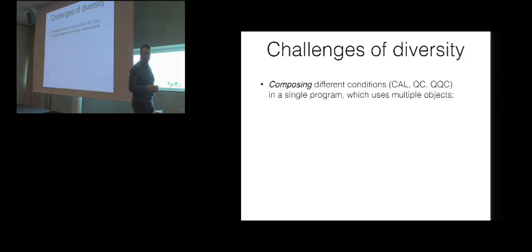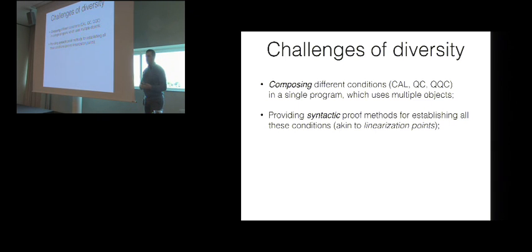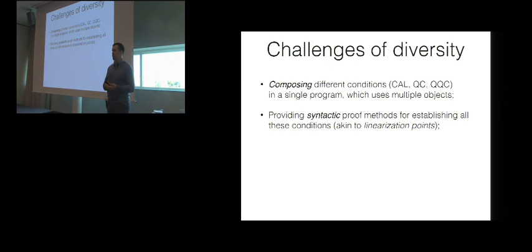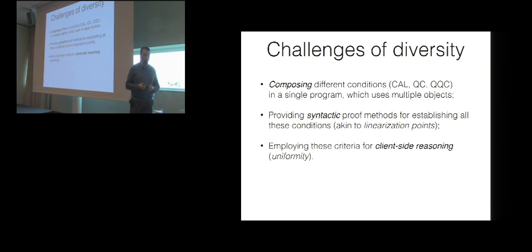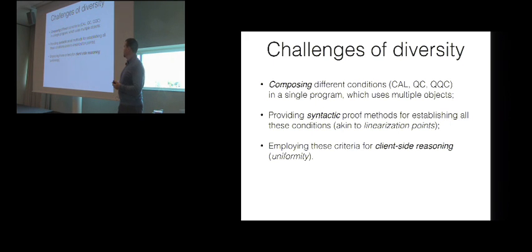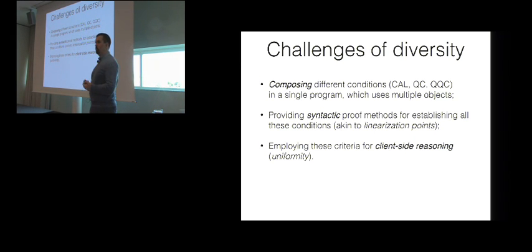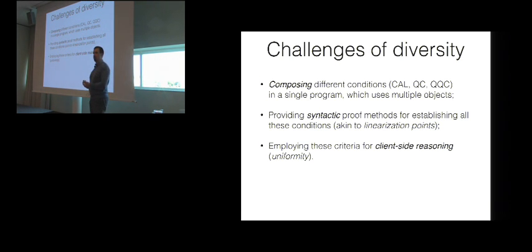So now we don't really have a nice compositional reasoning method. The second issue is the lack of a nice verification methodology. Linearizability comes with a very well-understood verification method, which is linearization points — it's very syntactical, very graphical, and quite pleasant to use. None of such methods are developed for any of the correctness criteria I have mentioned. The last problem is what we call uniformity, related to reasoning about client applications of those concurrent libraries. The correctness condition tells you how the library behaves in an abstract context, but it doesn't give you a recipe for how to plug it into your client code and prove properties of the code that uses this library.